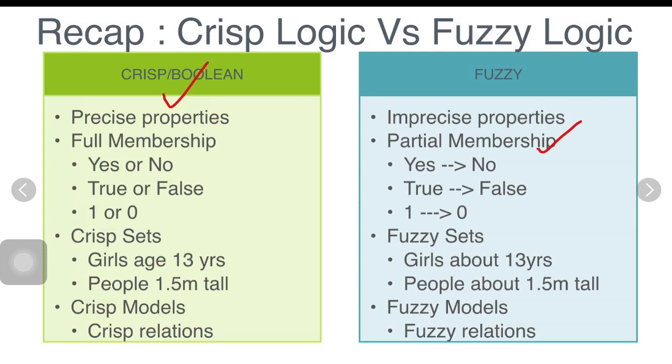Fuzzy logic uses the continuum of logical values between zero, completely false, and one, completely true.